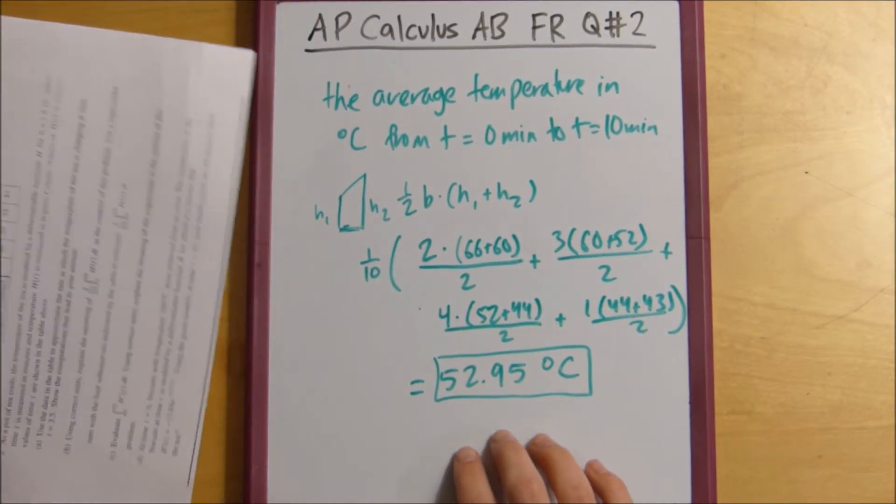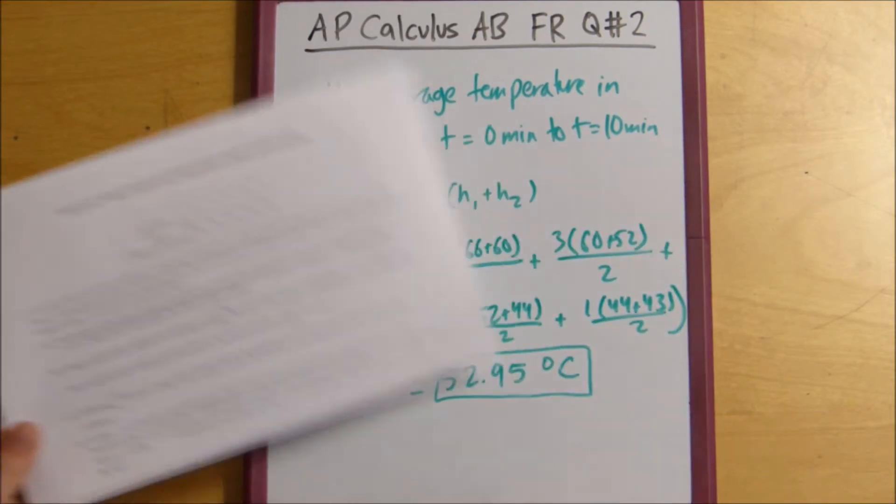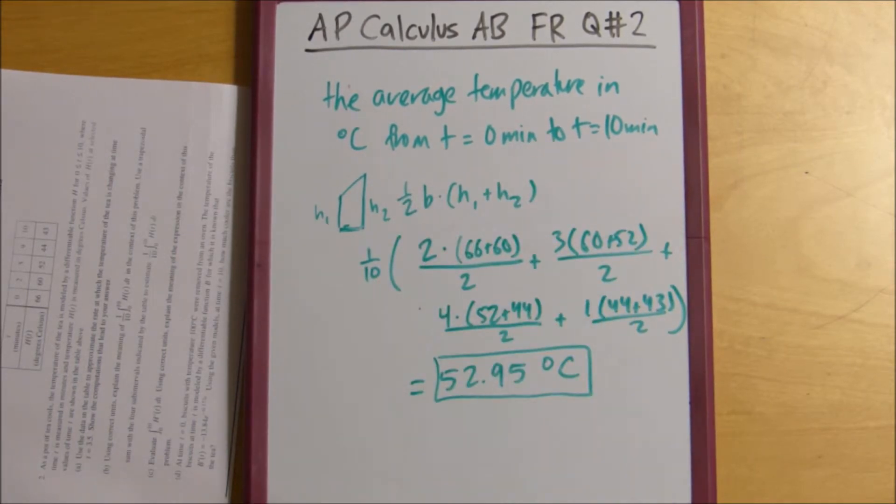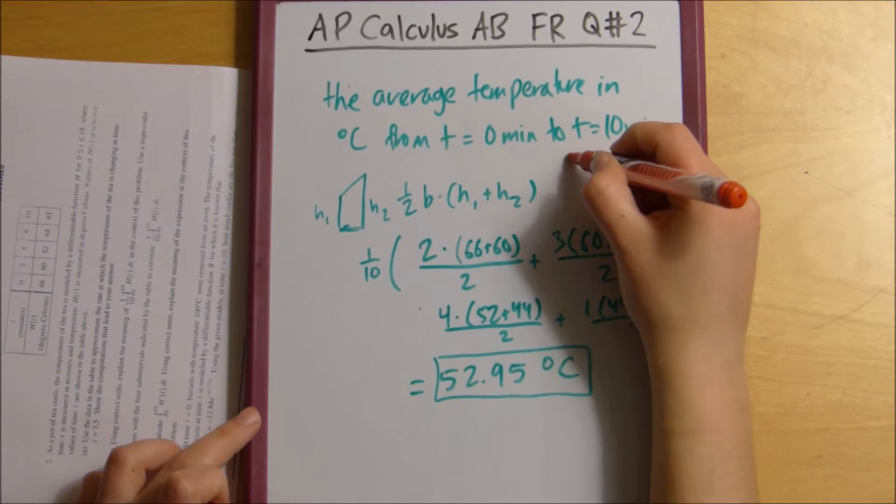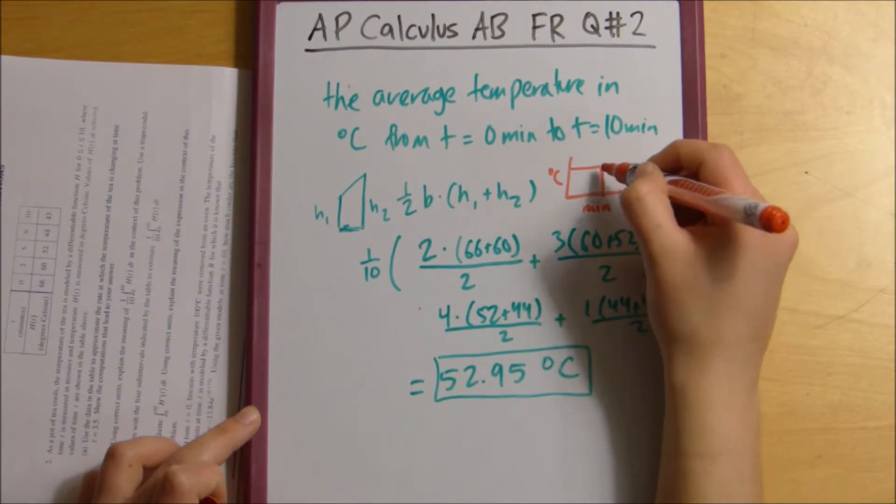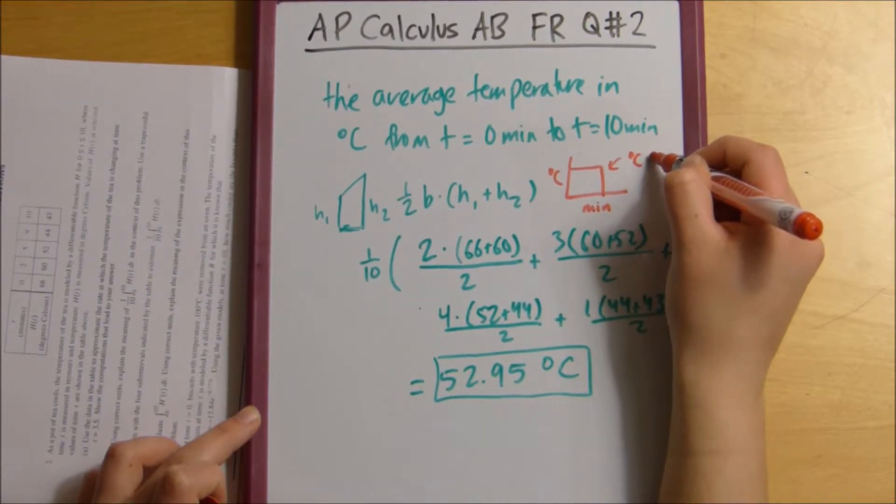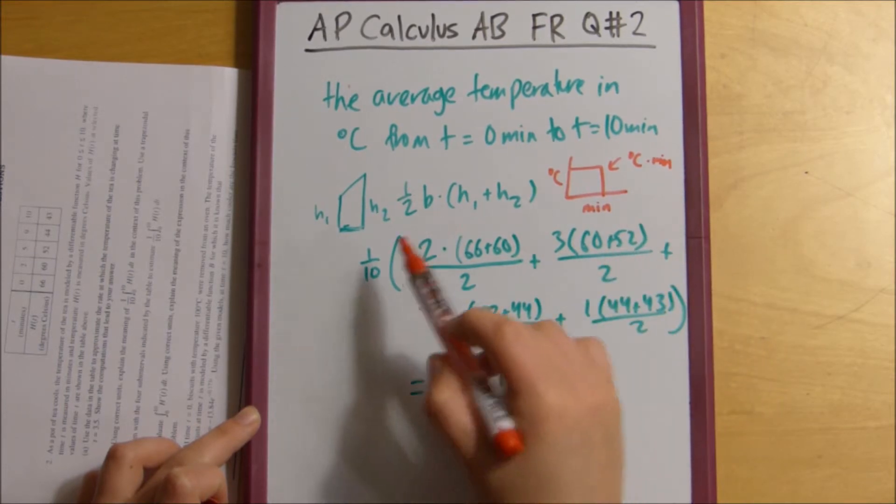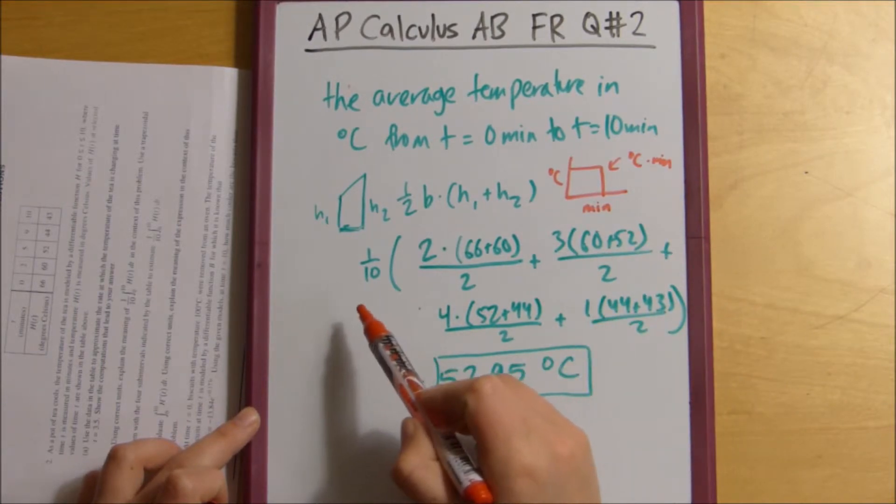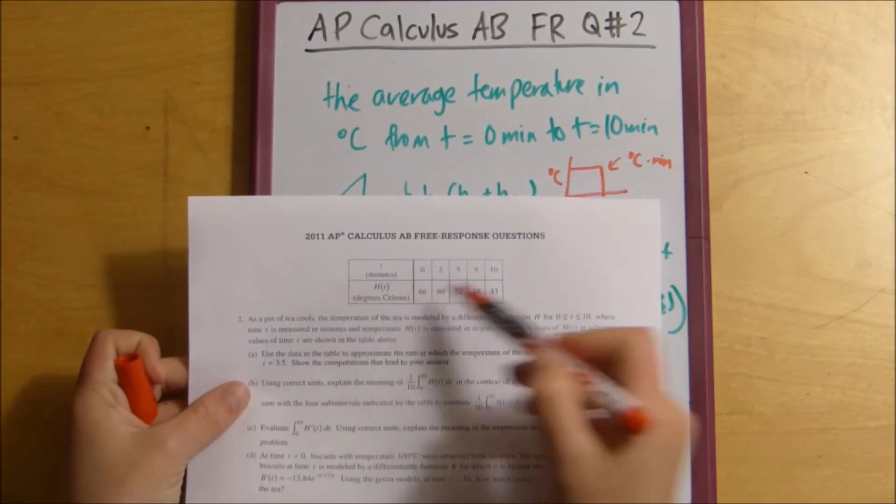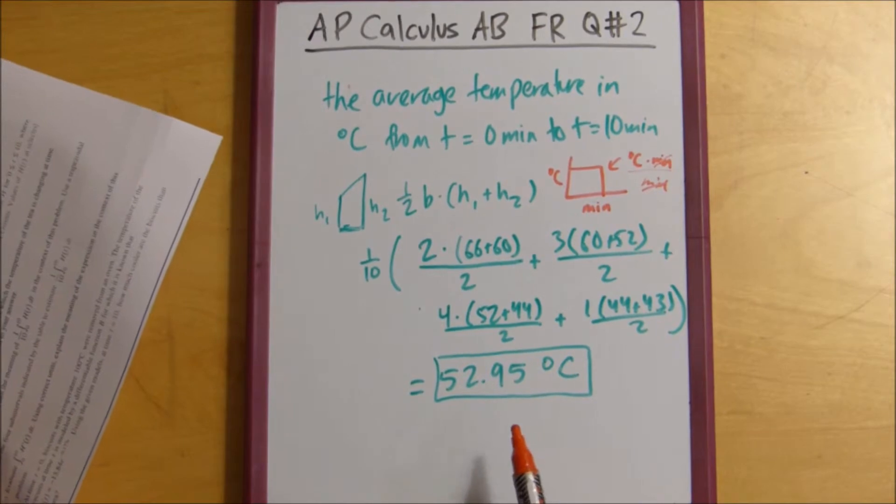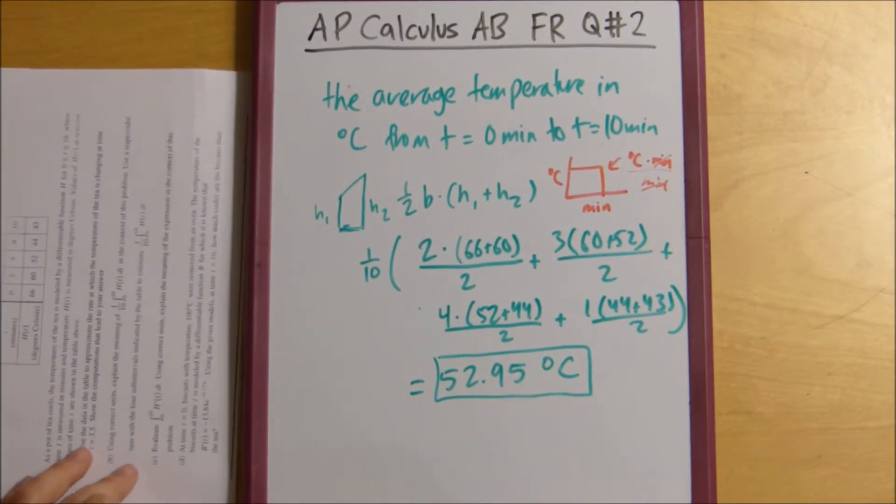So, essentially what we're finding here is, because we know that our area—since our base is in minutes, it's time. Let me draw out a picture here. So, we've got minutes and we've got degrees Celsius. Since we know that our area is going to be equal to degrees Celsius times minutes, when we add all this up, it's going to be degrees Celsius times minutes. And then, since we're dividing by the change in time, divided by minutes, we know that our average temperature is going to be in degrees Celsius. That's just a little way to remember it.